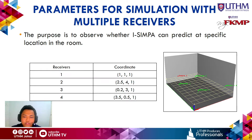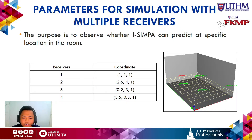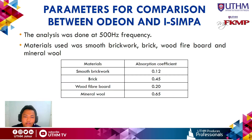The purpose of the multiple receiver simulation is to observe whether i-Simpa can predict reverberation time at a specific location in the room. The simulation was done in the first room with four different receivers at four different random coordinates. For the comparison between Odian and i-Simpa, the analysis was done at 500 Hz, using four materials: smooth brickwork, brick, wood fiber board, and mineral wool — with absorption coefficients at 500 Hz only.